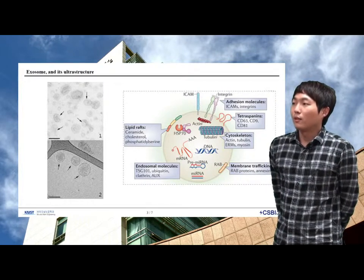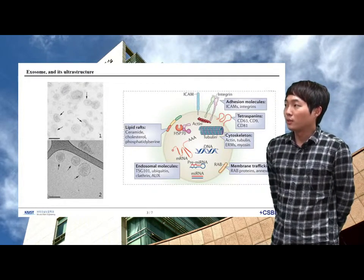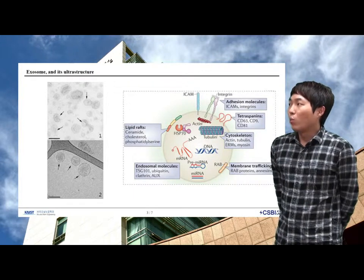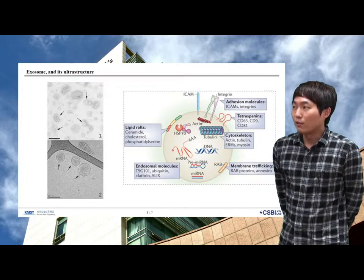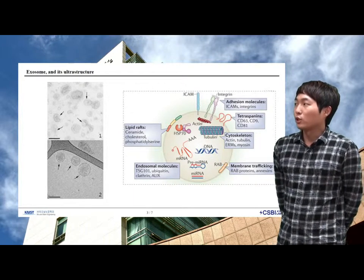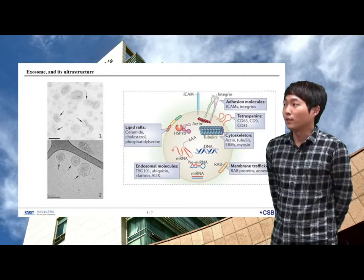The second figure represents exosomes from prostate epithelial cells that were directly frozen and observed by cryo-electron microscopy without chemical fixation or contrasting. Exosomes appear round.